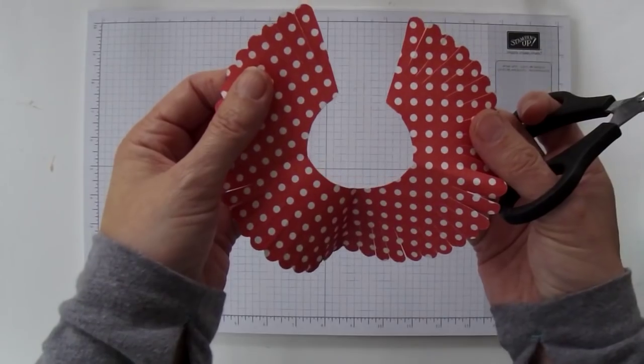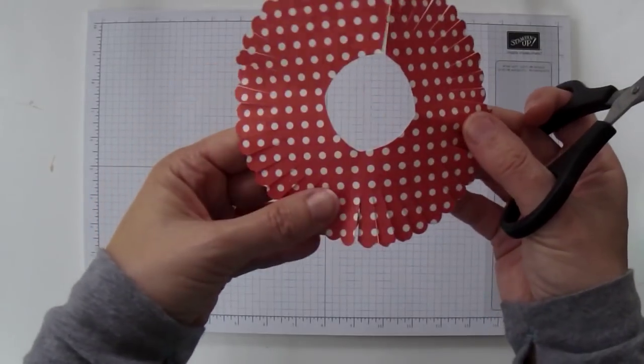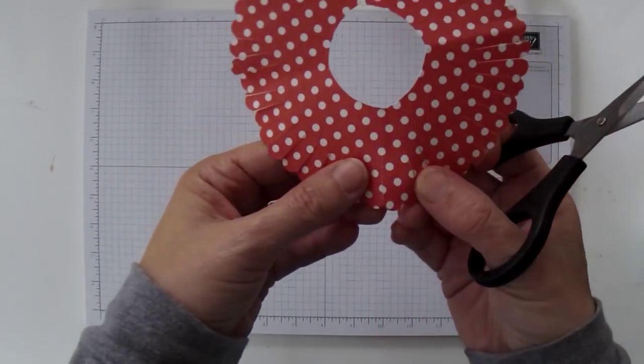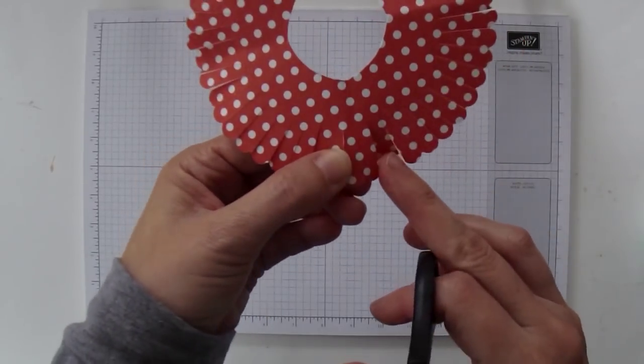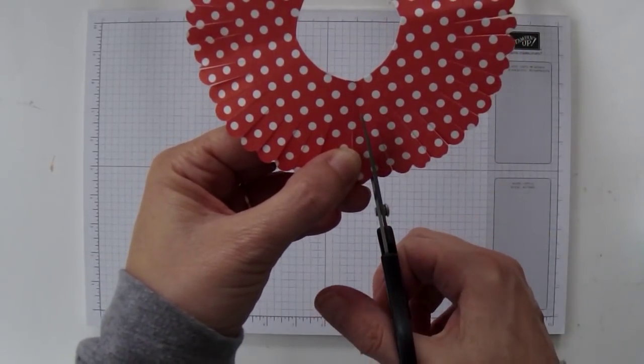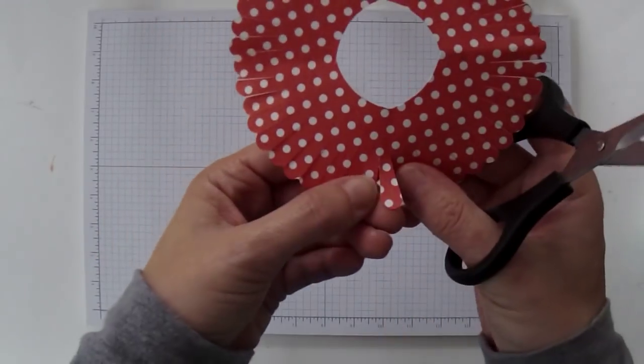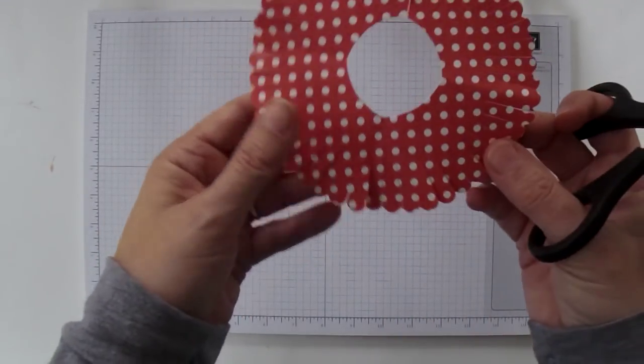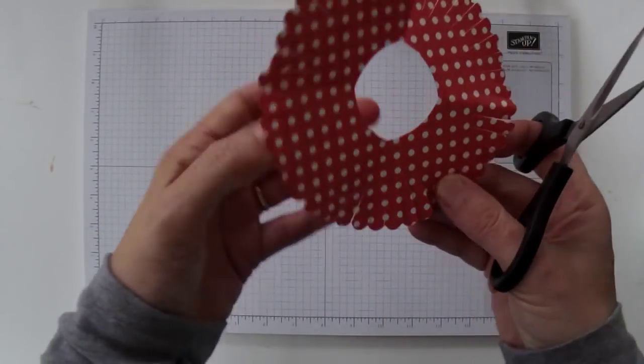So now I've got an open ended doughnut shape piece. Now on the opposite side, you're also going to have a double scallop. You don't want to cut that all the way through, but we're going to cut it down to match the other petals so that when we're rolling this flower up, it's an individual petal.